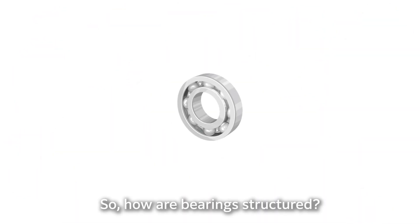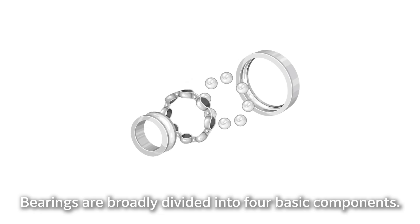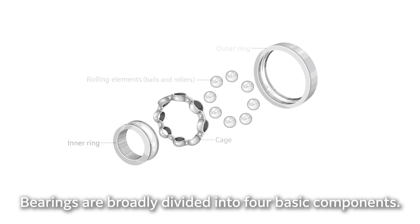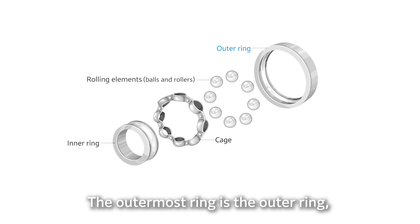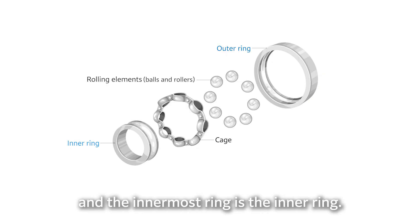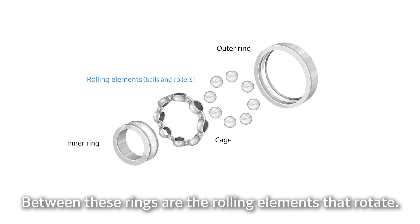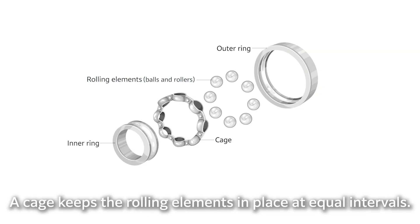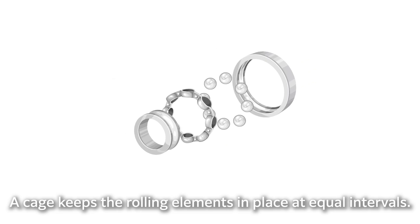So, how are bearings structured? Bearings are broadly divided into four basic components. The outermost ring is the outer ring, and the innermost ring is the inner ring. Between these rings are the rolling elements that rotate. A cage keeps the rolling elements in place at equal intervals.